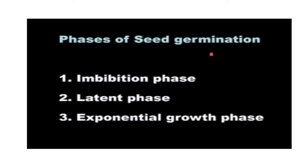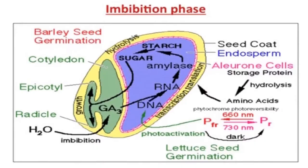There are three phases of seed germination: one is the imbibition phase, second is the latent phase, and third is the exponential growth phase. In the imbibition phase, water is absorbed by the seed which activates gibberellic acid synthesis. This increased gibberellic acid leads to increased DNA synthesis, then RNA synthesis or transcription, which finally leads to the production of amylase enzymes. This amylase enzyme degrades starch and converts it into sugar.